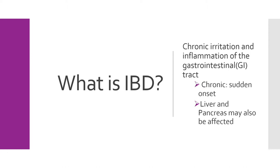The liver and pancreas can also be affected. These can be affected first, where your dog or cat might start with a pancreatitis or hepatitis, and then through a bacterial infection, this can travel to the gastrointestinal tract. Either that, or the bacteria could start in the gastrointestinal tract and then cause a pancreatitis or a hepatitis.